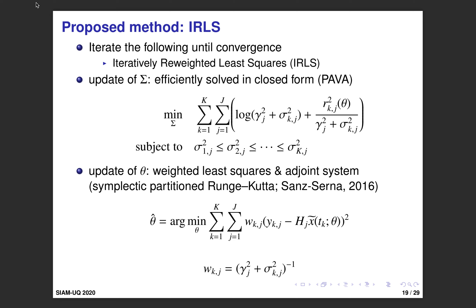After updating sigma, we update theta. Once sigma is fixed, the problem with respect to theta is a weighted least squares problem, which we solve by a gradient method such as nonlinear conjugate gradient or quasi-Newton. To do that, we need the gradient of the objective function with respect to theta. There is a method using an adjoint system of the original ODE model, and a result by Sun and Selena using a symplectic partitioned Runge-Kutta method to obtain the gradient efficiently.